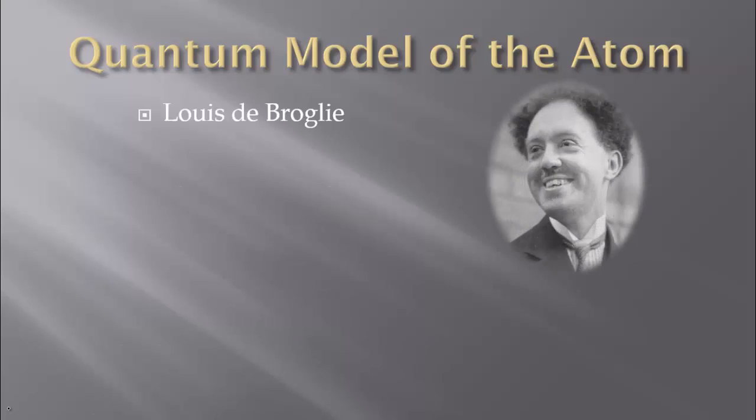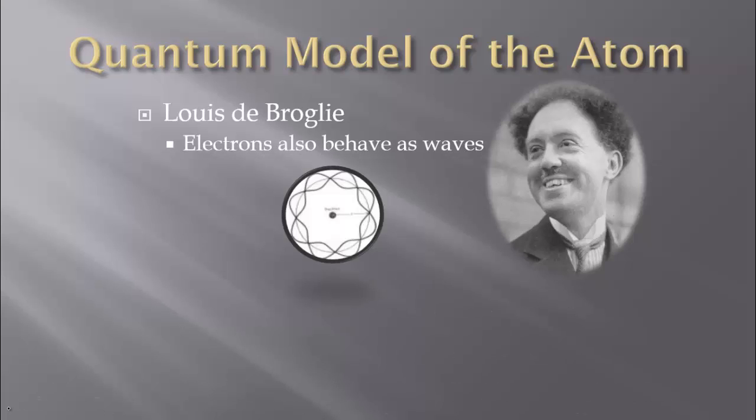The first person we're going to introduce you to is Louis de Broglie. He says that electrons also behave as waves. If we could have photons, which basically have no mass — very small packets of energy that behave as waves and particles — why can't the electrons, which are also very small particles, behave as waves?